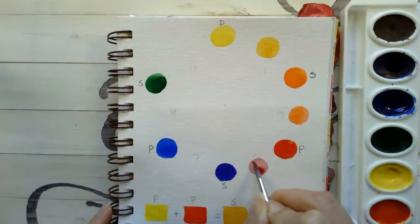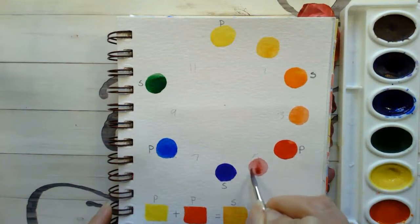If you get it on there and it's too red, add more violet. If you put it on there and it's too violet, add more red.